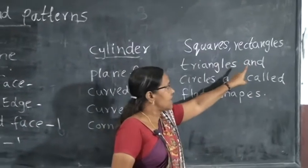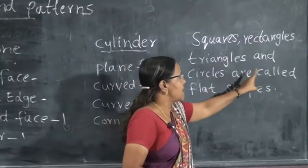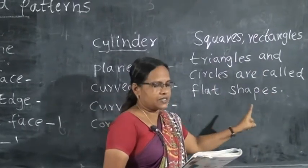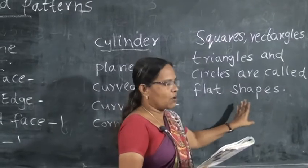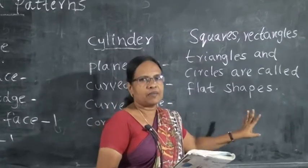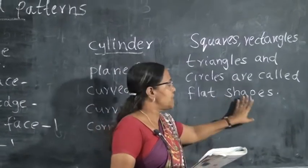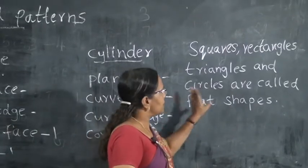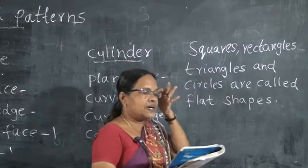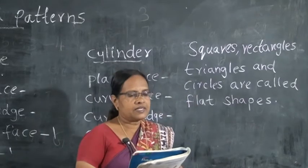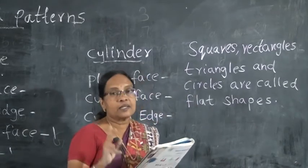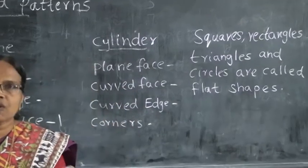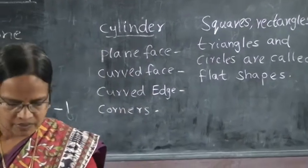Squares, rectangles, triangles and circles are called flat shapes. A flat shape is also called a plane shape. All plane shapes except circles have sides and corners. The circle does not have sides or corners.